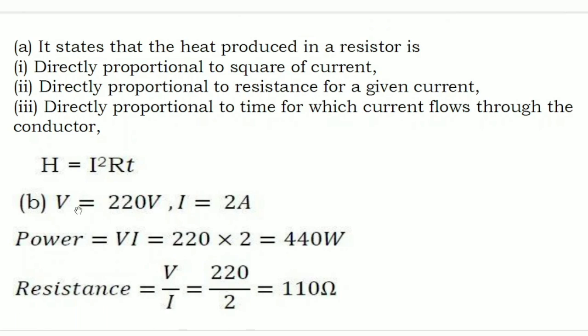Alternative question B: an electric bulb is connected to a 220 volt generator and the current is 2 amps. Find the power and resistance of the bulb. Given: V = 220 V, I = 2 A. Power = V × I = 220 × 2 = 440 watt. Resistance = V/I = 220/2 = 110 ohm.